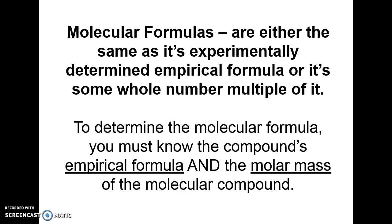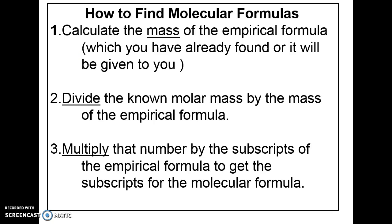Molecular formulas are either the same as the empirically determined empirical formula or a whole-number multiple of it. To find the molecular formula, we need the empirical formula and the molar mass of the entire compound. First, calculate the mass of the empirical formula by adding atomic masses from the periodic table. Then divide the known molar mass by the mass of the empirical formula — this gives a whole number representing how much larger the molecular formula is — and multiply the subscripts by that number.